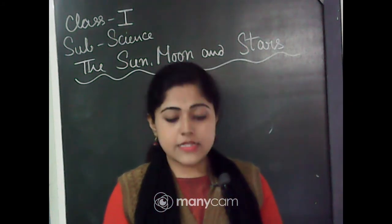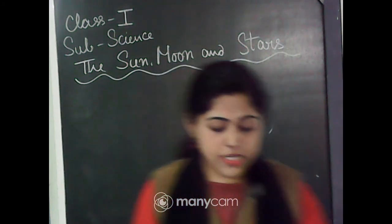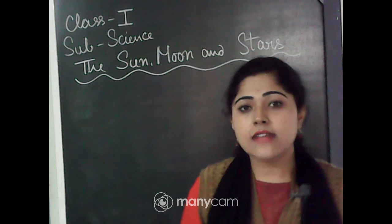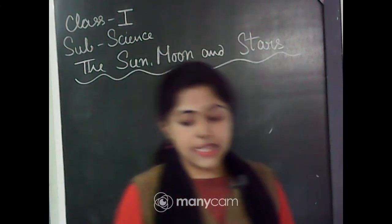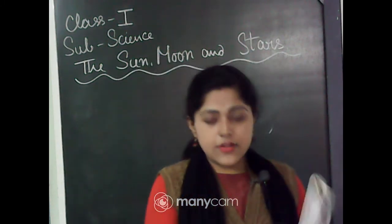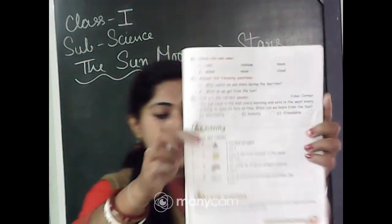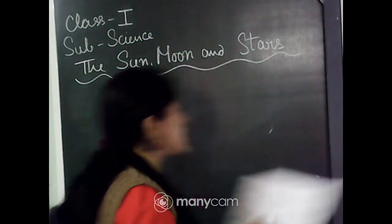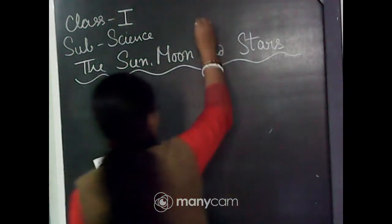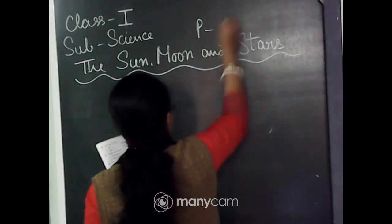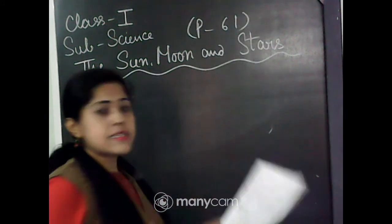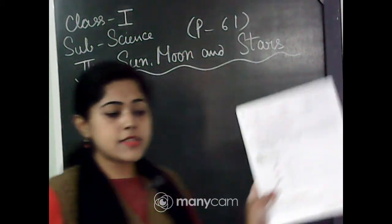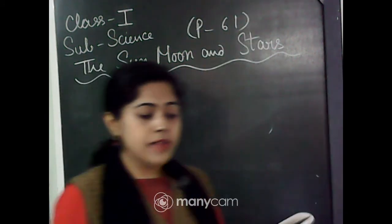Today we have to discuss about Question C — answer the following questions — and Question D. Everyone take your book and open page number 61, the exercise part of Sun, Moon and Stars.